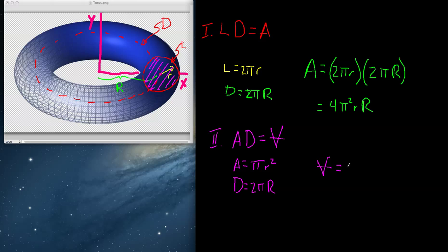If we want to know the volume, we know that it is pi r squared times 2 pi r. Now my computer's slowing down. So we get 2 pi squared r squared r is the volume.